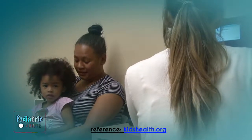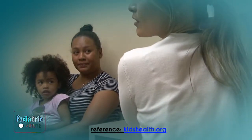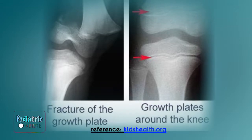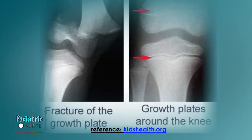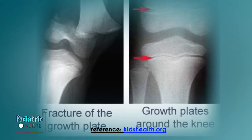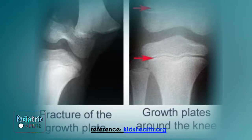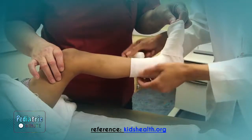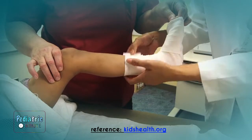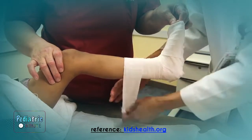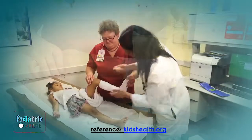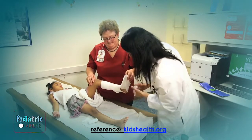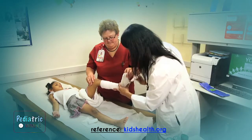Based on what the injury looks like and how it occurred, your doctor will decide to order an x-ray. Keep in mind that an x-ray is not necessary for every single injury because x-rays look at the bone only and don't give us much information about the surrounding muscles, tendons, and ligaments. But if an x-ray is done and it confirms a fracture, a splint will need to be placed to protect and immobilize the broken bone and allow it to heal. Your doctor will also determine if the splint will then need to be replaced with a cast or if a referral to an orthopedic specialist is needed.